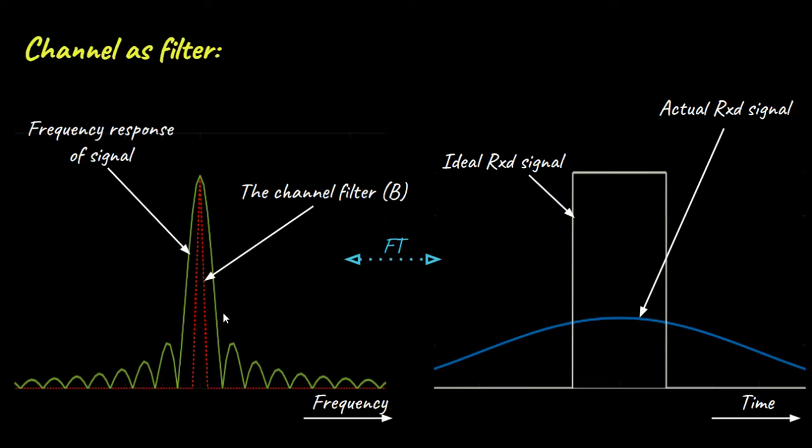Assuming the channel bandwidth to be constant at b, we can clearly see that a narrow band signal will have lesser time domain spreading than a wider band signal.